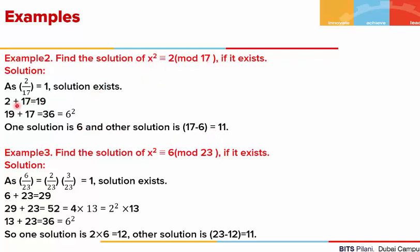To clarify what we did: to 2 we added 1 times 17, giving 19. Then we added 2 times 17 to the original residue: 2 plus 2 times 17 gives 36, which is 6 squared.